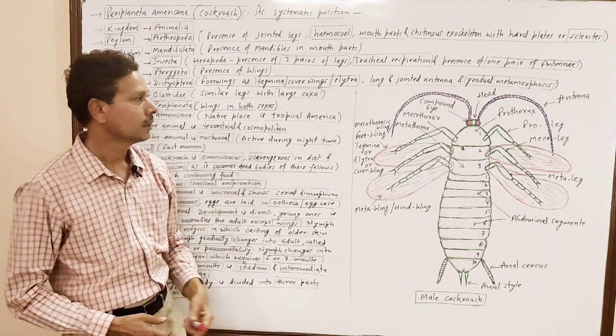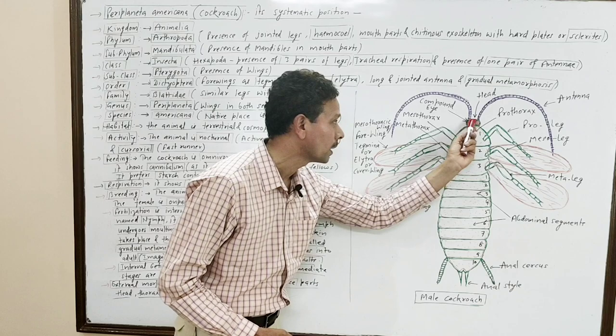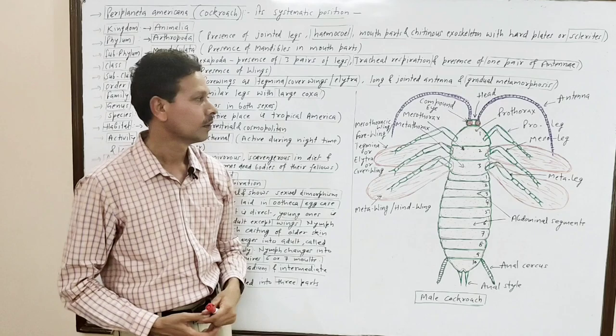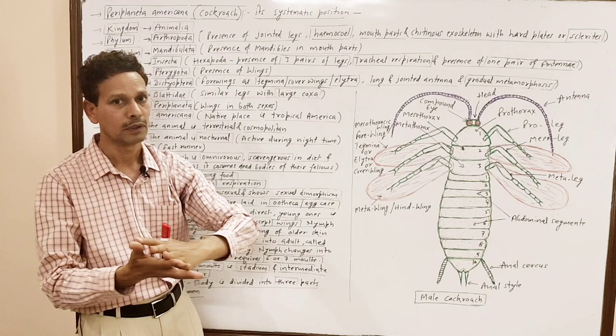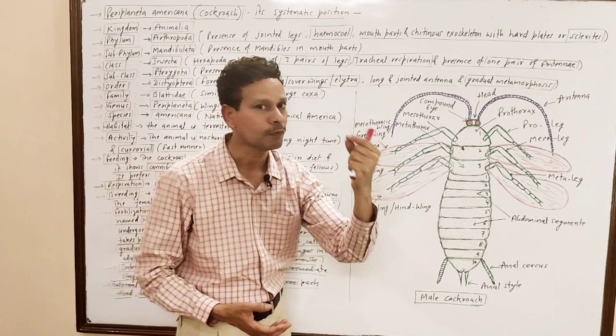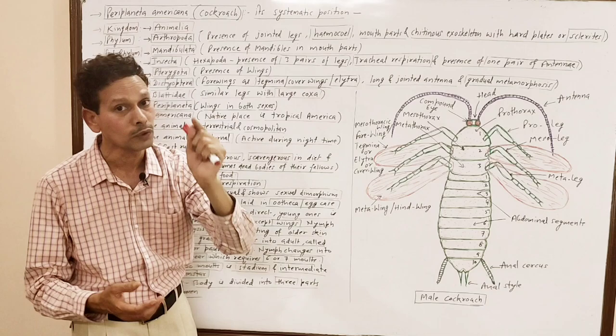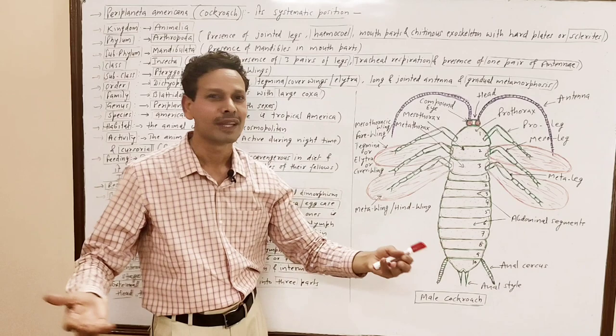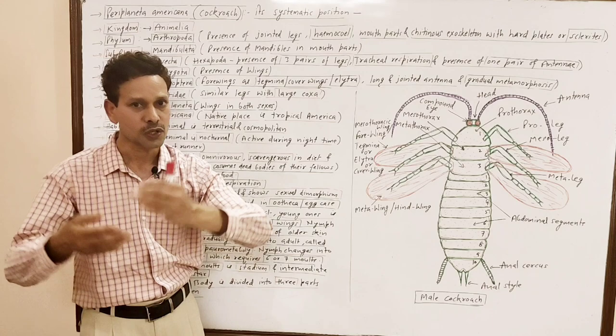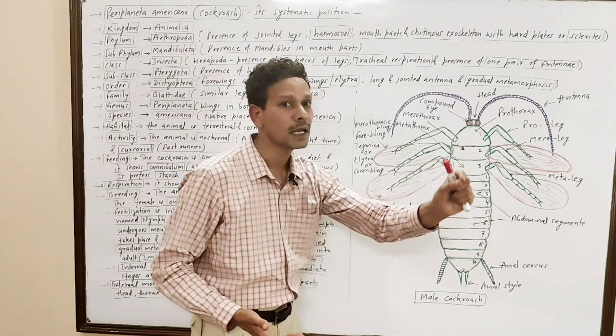The entire body of cockroach is divided into three parts: the anterior-most small part — the head; the middle part — the thorax; and the last part — the abdomen. On the head region, a pair of large kidney-shaped compound eyes are present. Note down: in case of cockroach, the eyes are not simple — each eye has about 2000 simple eyes called ommatidia, and each ommatidium is capable of producing its own image.